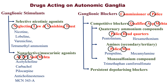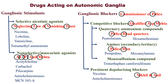Then, persistent depolarizing blockers. There are two policemen who are persistently blocking this criminal gang. N for Nicotine and the second persistent depolarizing blocker in this category.